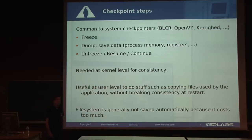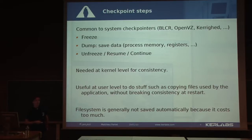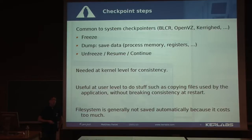What are the checkpoint steps? This is common to all system checkpointers. First, you have to freeze your application. Then you dump the data — the process memory, the registers, and all internal states of the application. Finally, you let your application resume. These steps are needed at kernel level for consistency, because if you checkpoint the process without stopping the application first, you won't be able to restart it consistently.